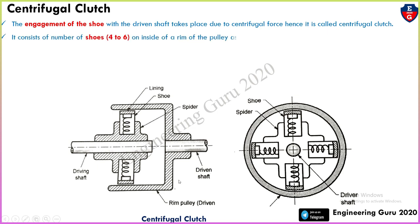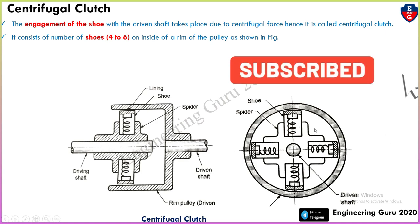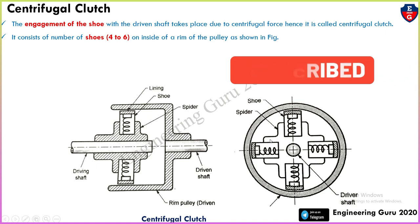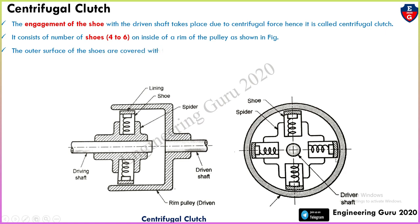It consists of a number of shoes — 4 to 6 — on the inside of a rim of the pulley. Here there are 4 shoes: 1, 2, 3, and 4. These are installed inside the rim of the pulley. The outer surface of the shoes is covered with friction lining. Whenever the driving shaft rotates, due to centrifugal force, this lining will directly contact the pulley and engagement is possible.